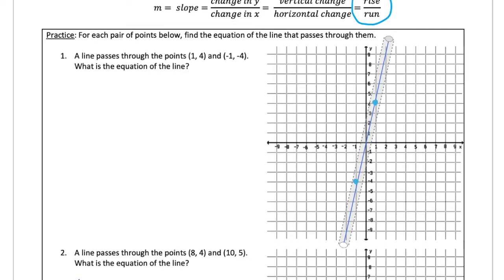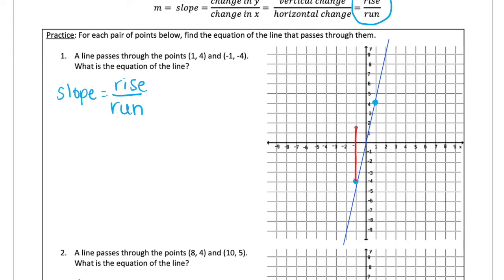To figure out the slope we use rise over run. Rising means moving vertically — like standing up from a chair — and running means moving horizontally on a flat surface. From the first plotted point down to the second, counting all the little blocks going up: one, two, three, four, five, six, seven, eight — so the rise is plus eight. Then moving horizontally: one, two to the right — so the run is plus two.